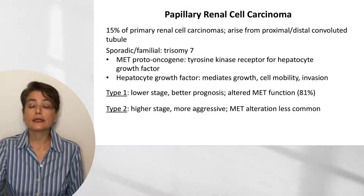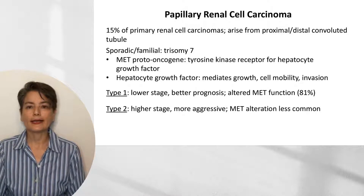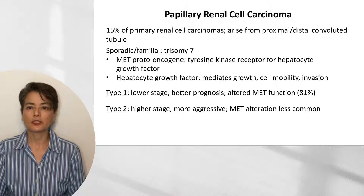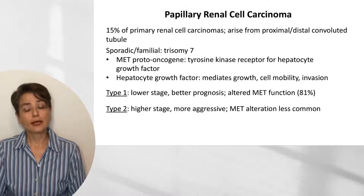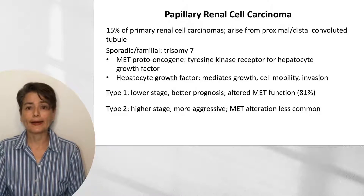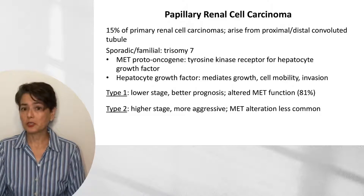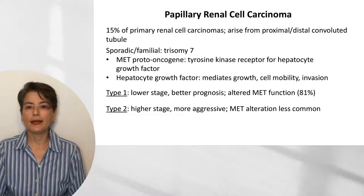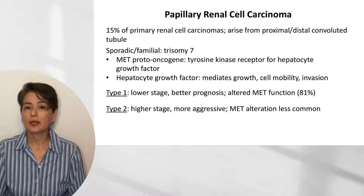Now let's talk about papillary renal cell carcinoma — less common at about 15% of primary renal cell carcinomas, thought to arise from the proximal and distal convoluted tubule. Like clear cell carcinoma, there are both sporadic and familial cases, and they tend to show a trisomy of chromosome 7. On chromosome 7 is the MET proto-oncogene, a tyrosine kinase receptor for hepatocyte growth factor, which mediates growth, cell mobility, and invasion.